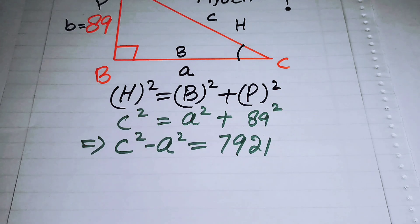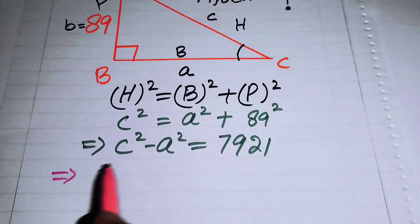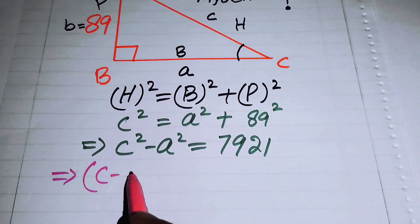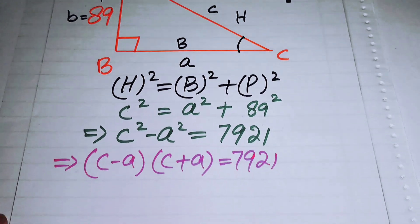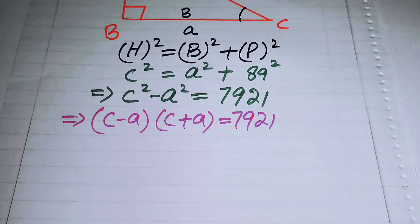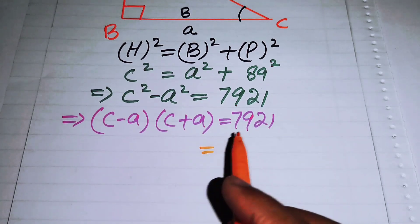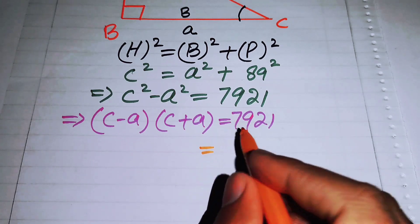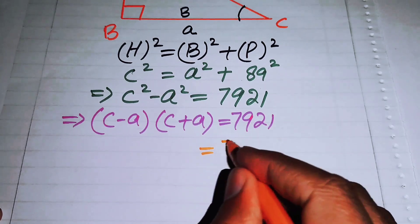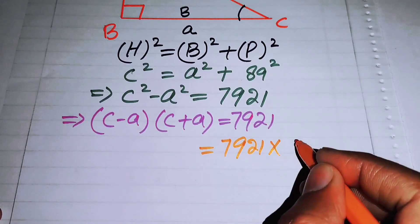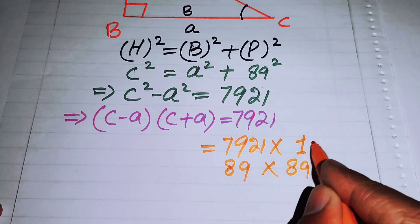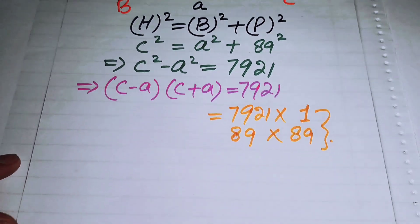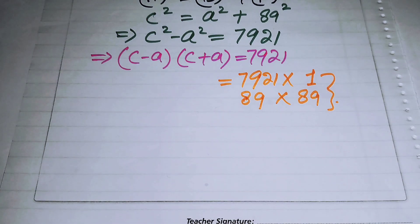In the next step we factor the left-hand side using the difference of squares formula, giving (c - a)(c + a) = 7921. On the right-hand side we need two factor pairs: 7921 × 1, and 89 × 89.